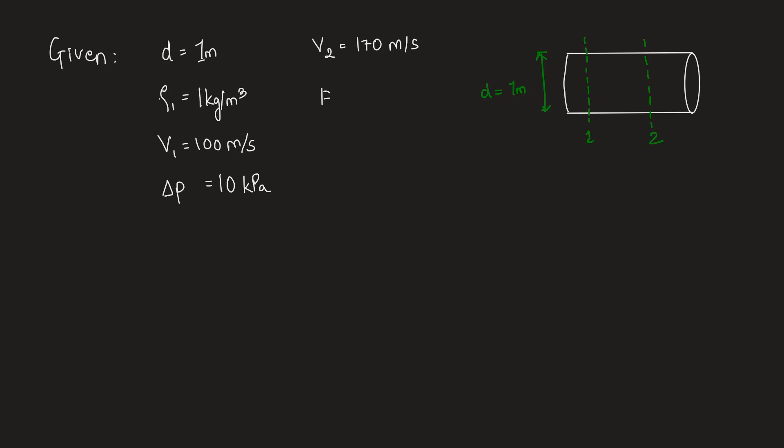We need to find out the force exerted by the fluid between these two sections 1 and 2. So, definitely we have to use linear momentum equation which states that summation F, that is summation of forces on a control volume, is equal to on the right hand side we have to take the rate of change of linear momentum between these two sections 1 and 2.